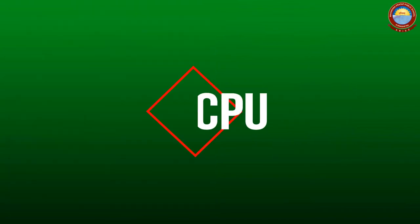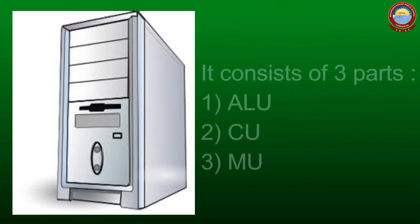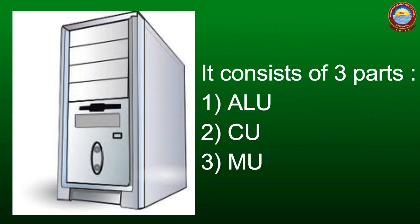The CPU box contains the CPU, which is the brain of the computer. Its full form is central processing unit. It controls all the parts of a computer. It consists of three parts: first, ALU, which performs all the calculations; second, CU, the control unit, which controls all the activities and movement of data between ALU and memory; third, memory unit, where all the data and instructions are stored. It is also called main memory or primary memory.